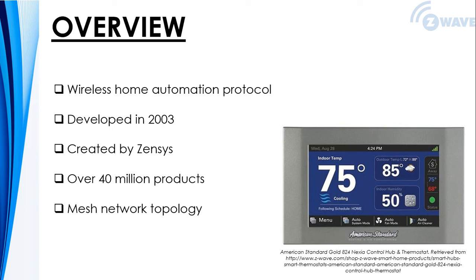How does Z-Wave work? Z-Wave is built on a mesh network topology. Non-battery devices are controlled by a central hub that you can interact with via a smart device such as a smartphone, Apple Watch, or tablet. You simply tell the hub what you want — for example, turn on the lights, view security cameras, or lower the music level — and the hub sends out the appropriate command to the right smart device.